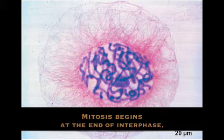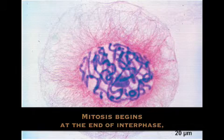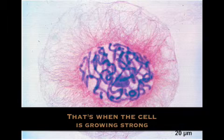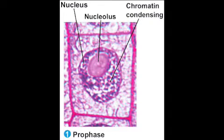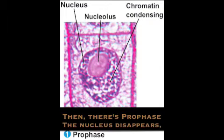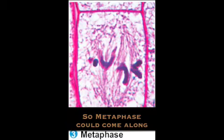Mitosis begins at the end of interphase — that's when the cell is growing strong. Then there's prophase, the nucleus disappears, so metaphase could come along.